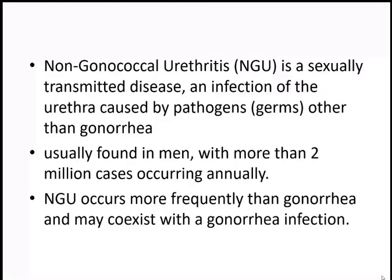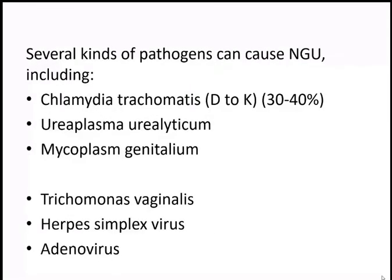Gonococcal infection and non-gonococcal urethritis can occur simultaneously and often coexist. The most common cause of non-gonococcal urethritis is chlamydia trachomatis, responsible for around 30 to 40 percent of cases. The specific strain involved is the oculogenital group D to K, which is different from the strain causing trachoma.